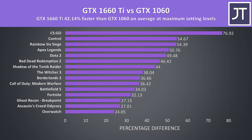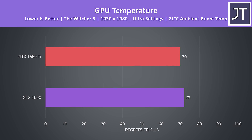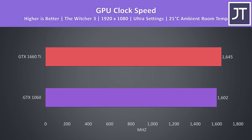The 1060 is still capable of offering a good experience in many titles with fair settings in 2020, the 1660 Ti is just much better. In terms of total system power draw from the wall, the 1660 Ti laptop was using about 7% more power — not bad when it was 38% faster in frame rate. Despite using more power, the 1660 Ti was running a little cooler too. Both laptops have very similar cooling solutions, so the 1660 Ti is definitely more efficient. Clock speeds were also just a little faster with the 1660 Ti when running this particular game.